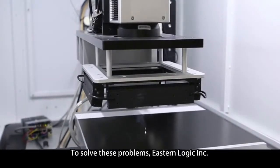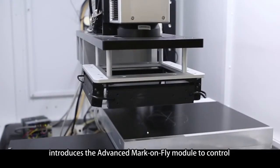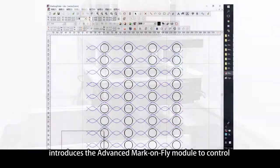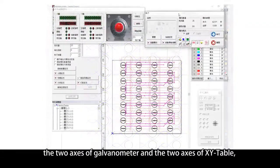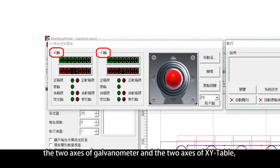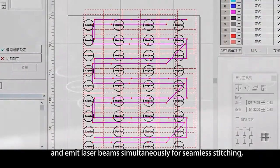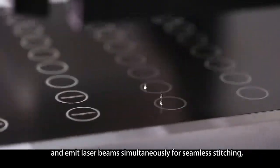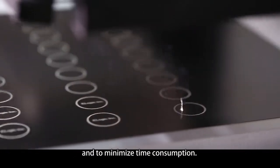To solve these problems, Eastern Logic Incorporated introduces the advanced mark-on-fly module to control the two axes of galvanometer and the two axes of XY table, allowing four axes to move and emit laser beams simultaneously for seamless stitching and to minimize time consumption.